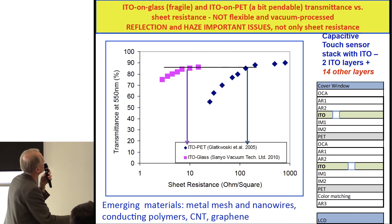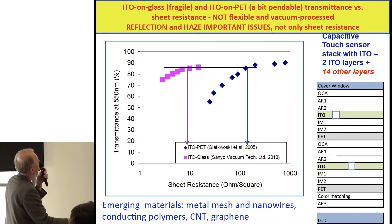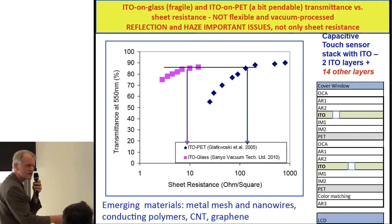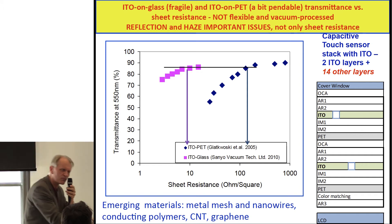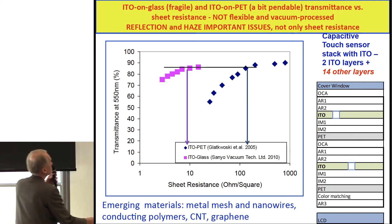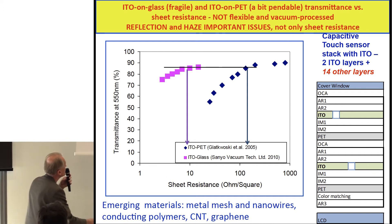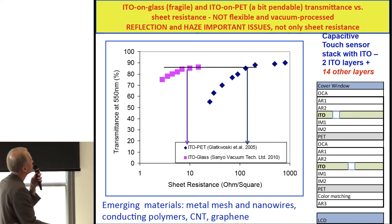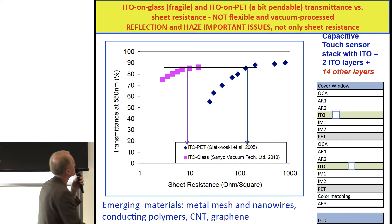If you think about the structure, a touch sensor is not so simple because ITO doesn't absorb light but it reflects. What we carry in our devices has about 16 to 20 layers in the touch sensor on top of the display. Interestingly, touch sensors are manufactured almost completely by companies, with not much academic involvement.